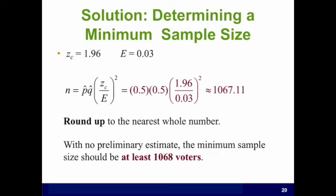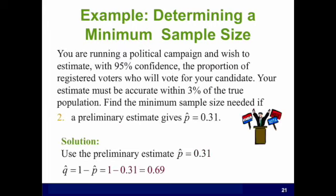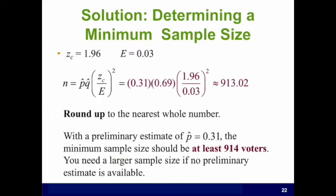If we use P hat and Q hat equal one half then we will always get a greater minimum sample size. In this case, we get 914. You need a larger sample size if no preliminary estimate is available.